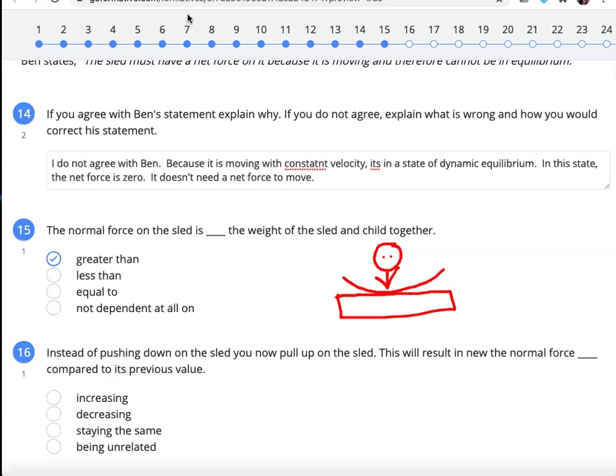Remember that the normal force is the force that the scale would read. Because the applied force is down and to the right. Imagine if you pushed down on this child and sled apparatus. The scale would read greater than their weight because you're applying a downward force. Whereas, if you were pulling up on the sled, the normal force would be smaller. So, that means greater than for 15, decreasing for 16.